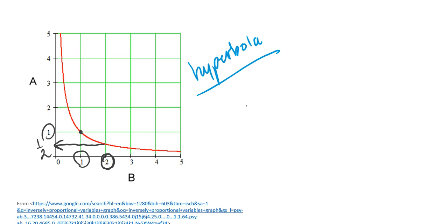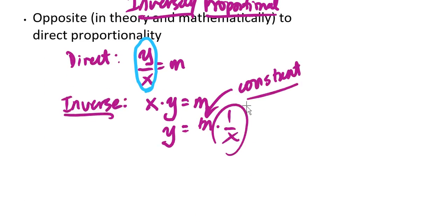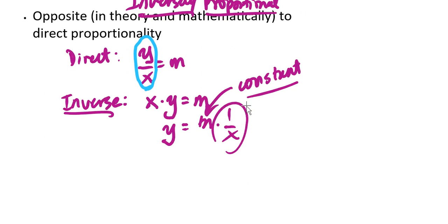and that relationship is mathematically described by this relationship right here, where y is equal to some constant times 1 over x. Now, we can use these equations to do calculations to make mathematical predictions about data sets.